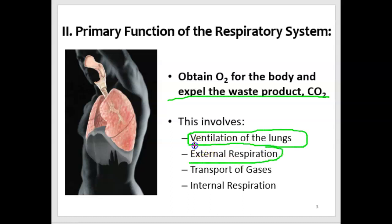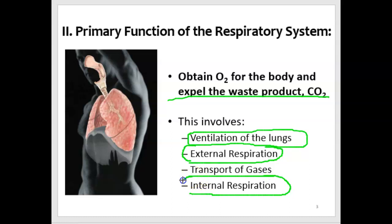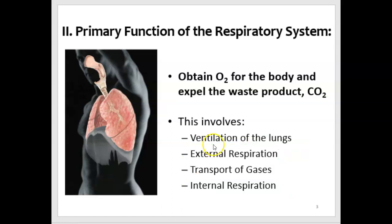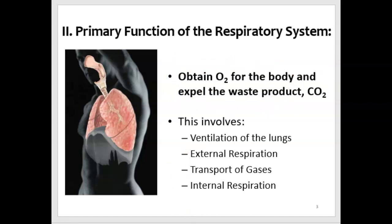We'll talk more about why we call it external versus internal in a bit. The respiratory system transports gases in the air, and there is some internal respiration that takes place between the cells and the blood, and then between the blood and the air in the lungs. So really, our main function is to obtain oxygen and expel CO2. There are some other functions as well, but that's the main one.